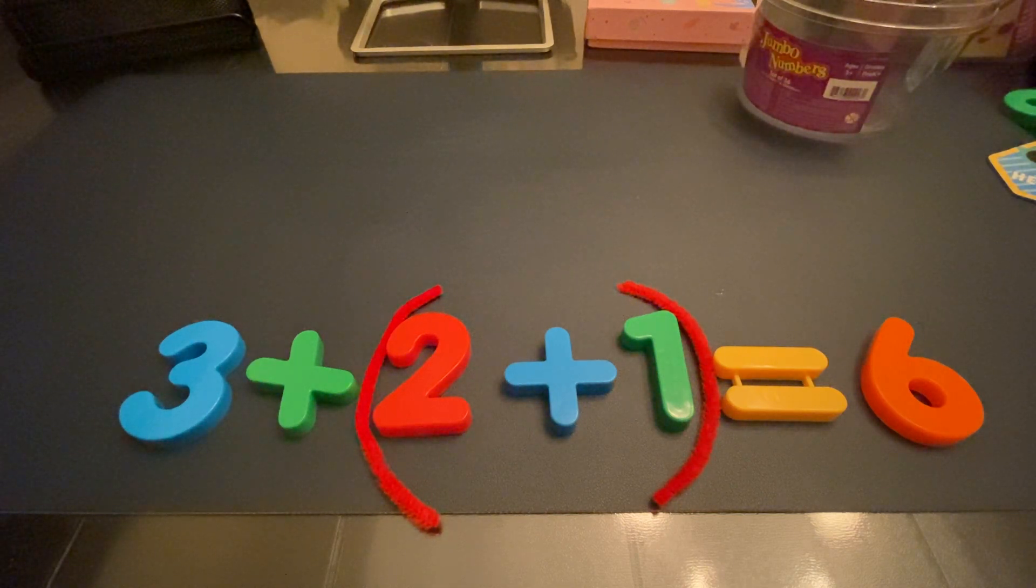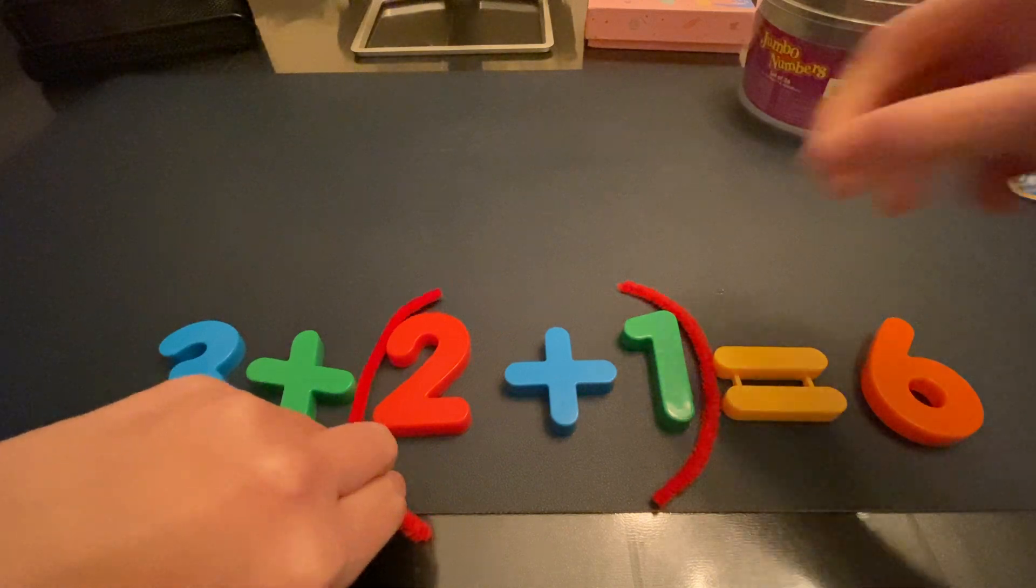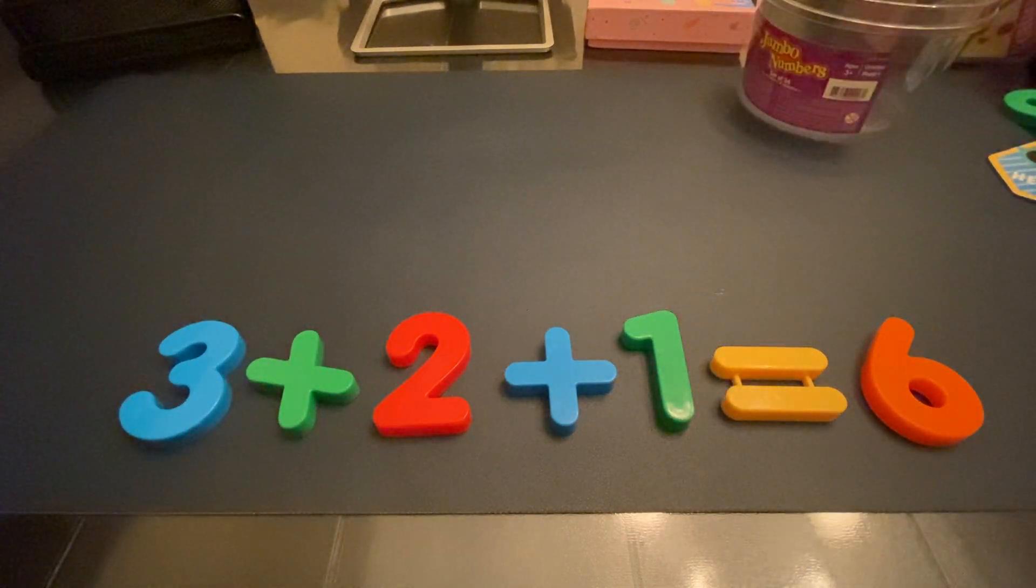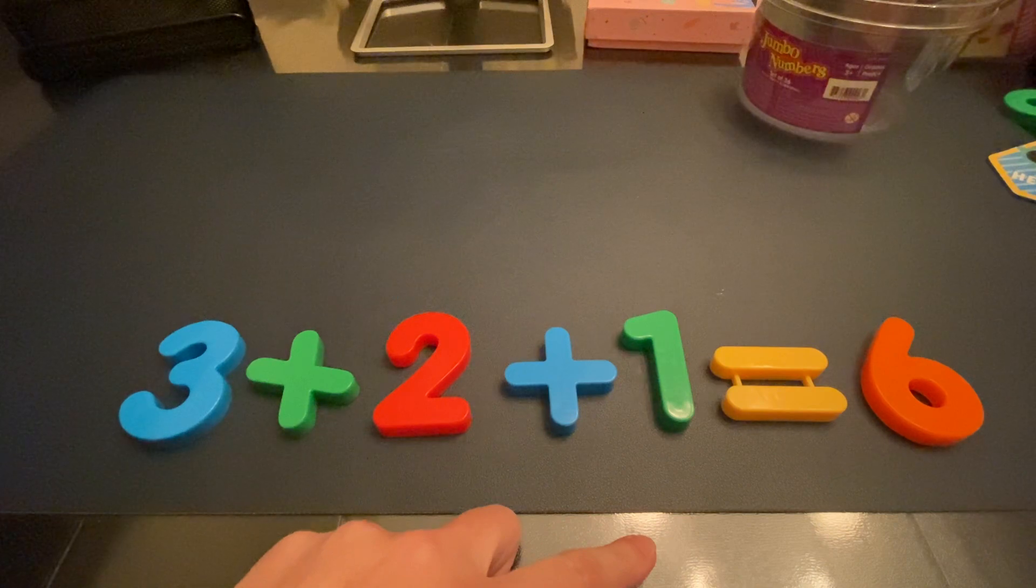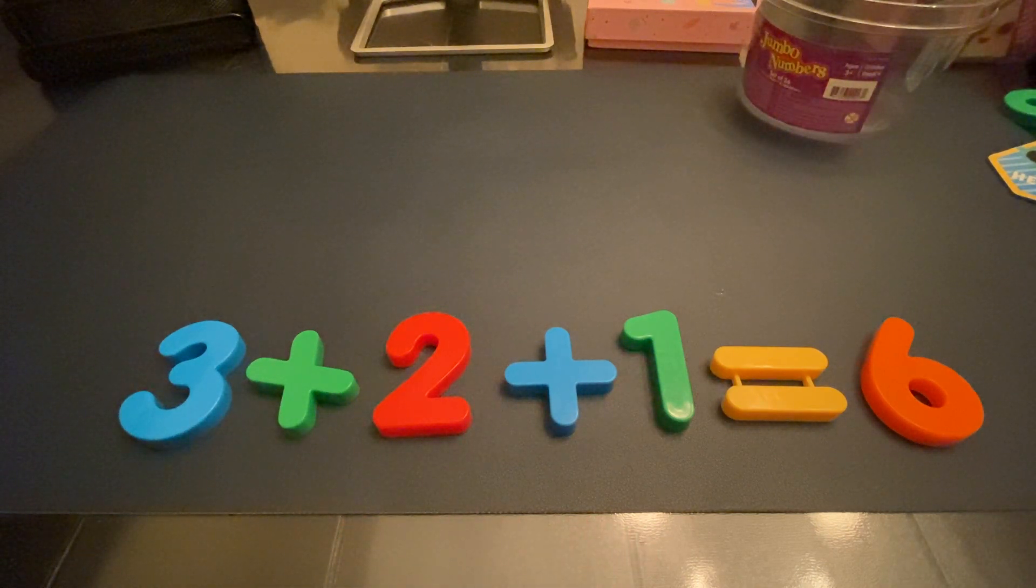So, regardless of the order, regardless of where the parentheses are, even if there's no parentheses, 3 plus 2 plus 1 equals 6. So, this is the associative property of addition. Thanks for watching.